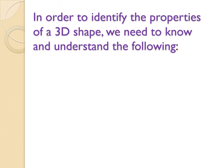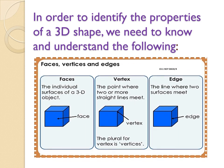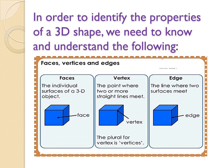In order to identify the properties of a 3D shape we need to know and understand the following: faces, vertices and edges. The individual surfaces of a 3D object is a face. The point where two or more straight lines meet is a vertex. The plural for vertex is vertices. An edge is the line where two surfaces meet.